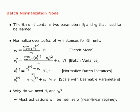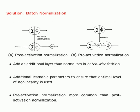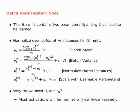We assume the i-th unit contains two parameters, βᵢ and γᵢ, that need to be learned. There are four primary operations during batch normalization. Note that some of these operations are also performed when normalizing input features. For each batch of M instances, you compute a batch mean — the mean of all the inputs Vᵢ^r, where r varies from 1 to M. Then you compute the variance over the batch of M instances. This is similar to what you do for input features, except here you do it over a batch rather than the whole dataset.